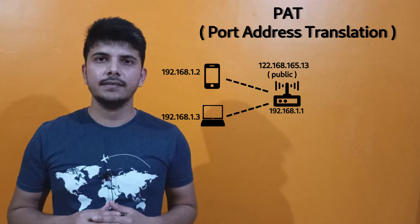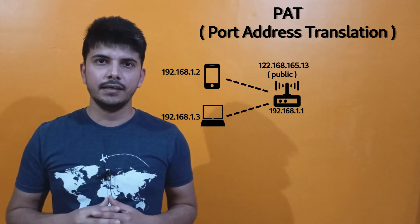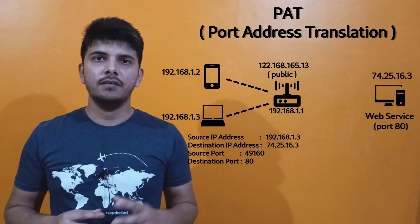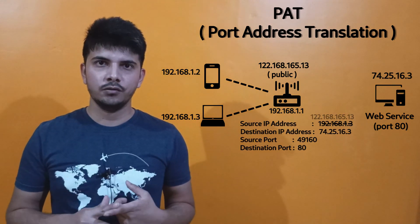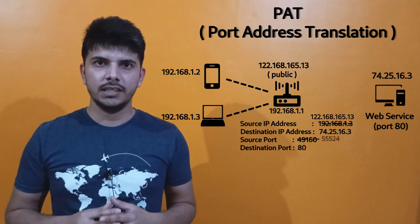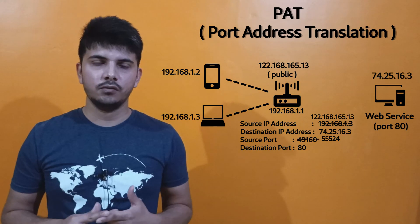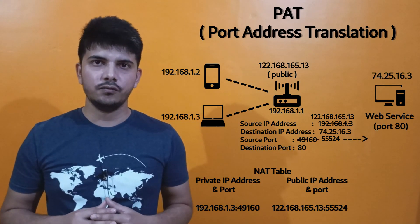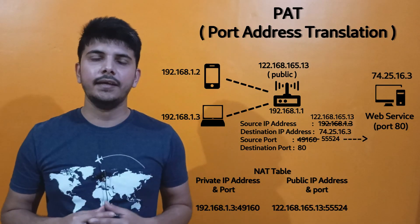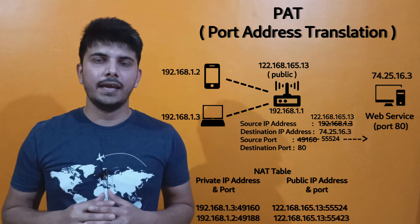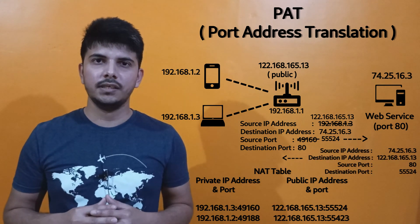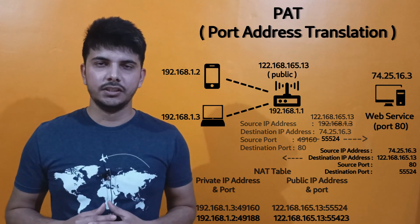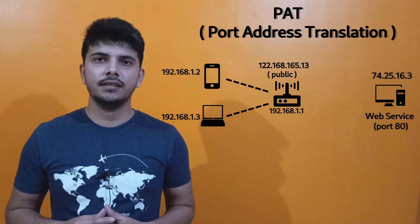For example, let's say there are two different devices connected to your home router and there is only a single public IP address available. When one system wants to communicate with the remote system, the router will change its source IP address with the public IP address and also change the source port address. With the combination of the source IP address and the source port, the NAT table entry will be created. If another device also wants to communicate with the same destination, it will create another entry in the NAT table, and the router will use this table to determine to which device incoming data needs to be reverted back.